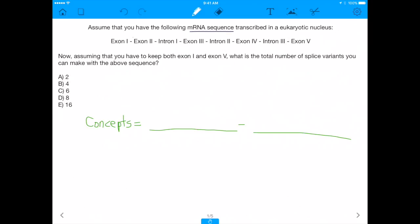It says, assuming that you have the following mRNA sequence transcribed in a eukaryotic nucleus: exon 1, exon 2, intron 1, exon 3, intron 2, exon 4, intron 3, exon 5. And the question is saying, assuming that you have to keep both exon 1 and exon 5, what is the total number of splice variants you can make with the above sequence?